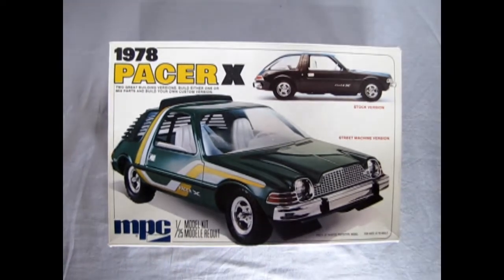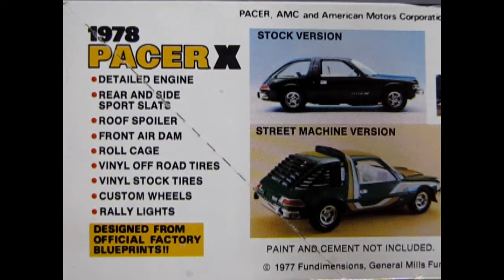So now let's jump back to 1978 where we get to check out the amazing Pacer X by MPC. The 1978 Pacer X comes with a detailed engine, rear side spoiler slats, roof spoiler, front air dam, roll cage, vinyl off-road tires, vinyl stock tires, custom wheels, rally lights, and it is designed from official factory blueprints.